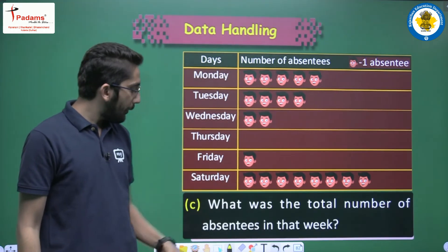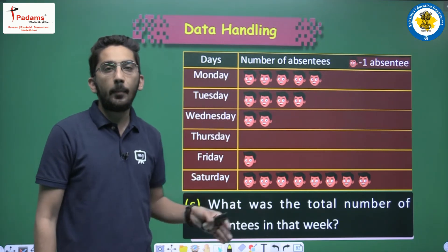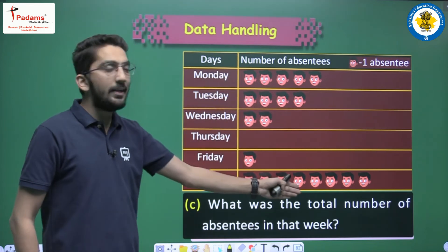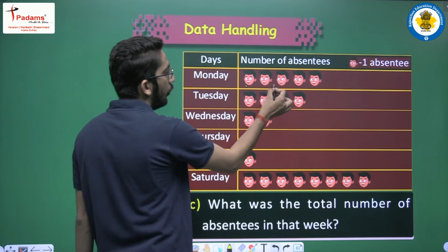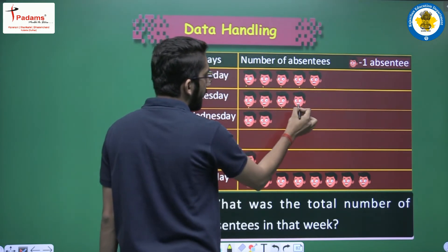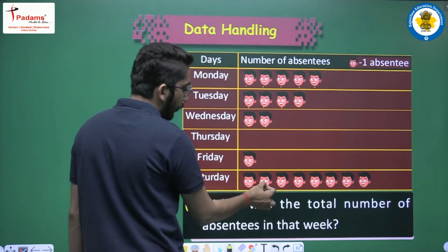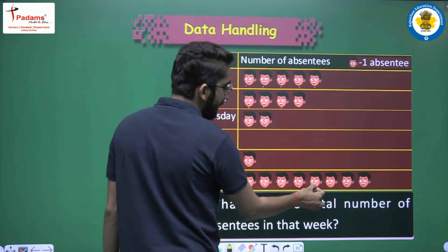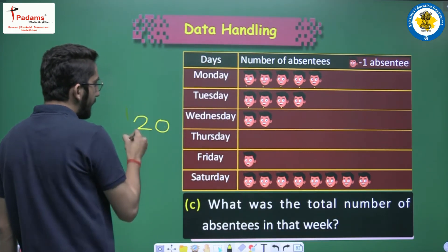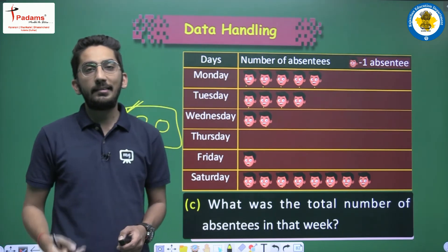What was the total number of absentees in that week? We count all the faces in the pictograph: 1, 2, 3... counting through all days gives a total of 20. So the total number of absentees in the week was 20.